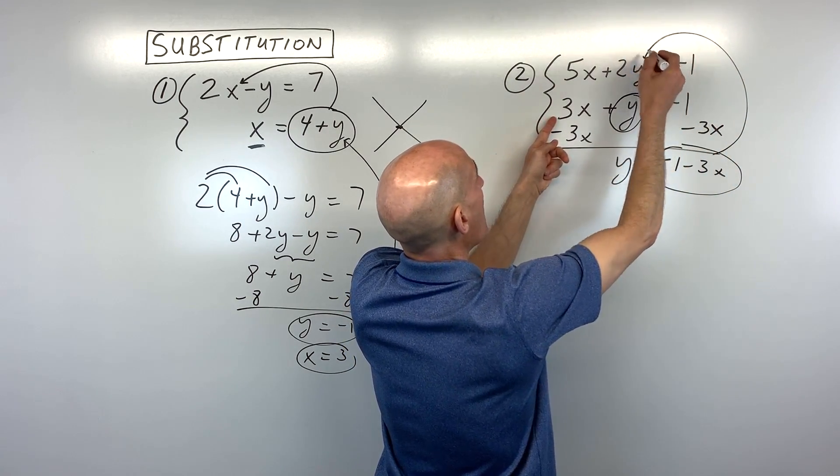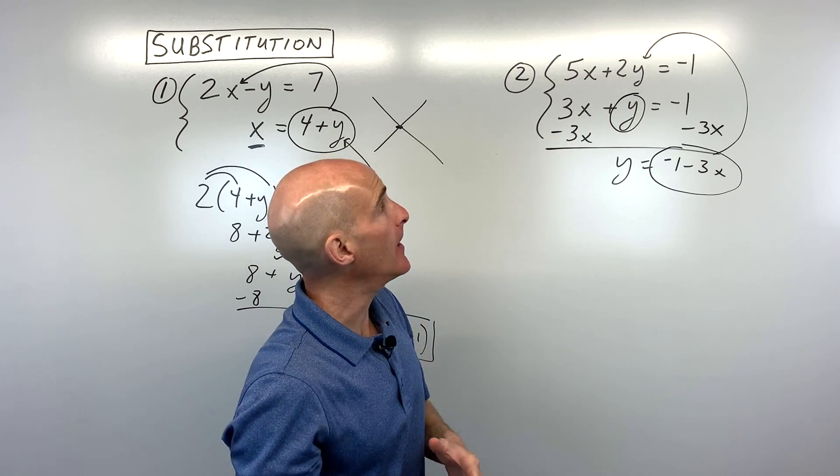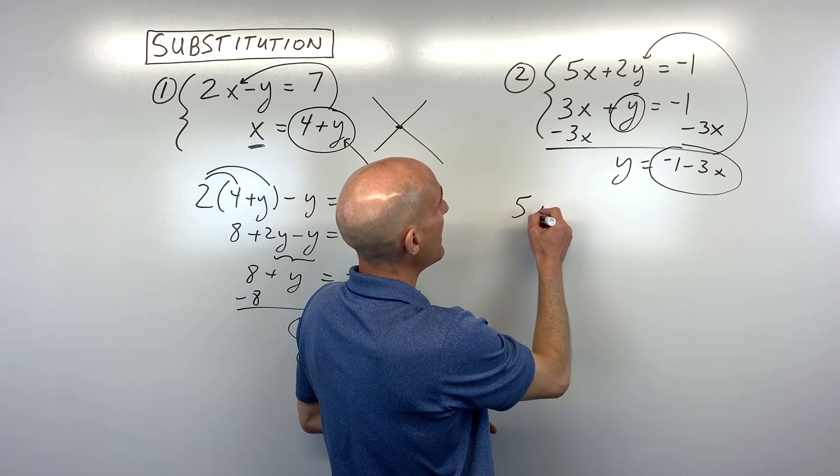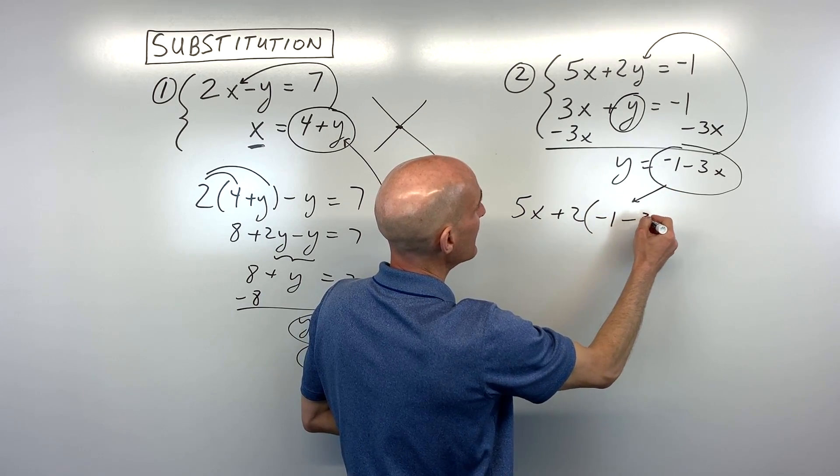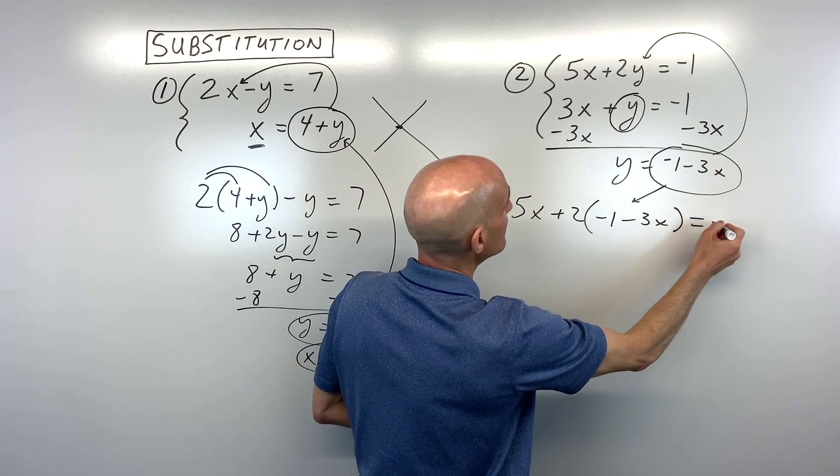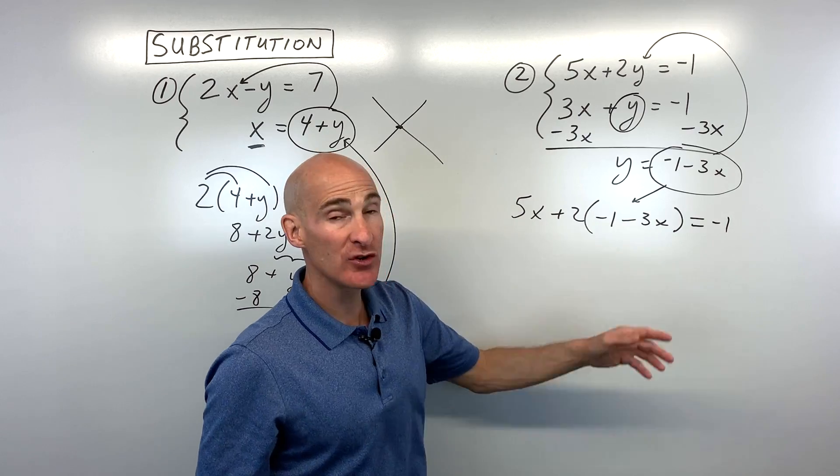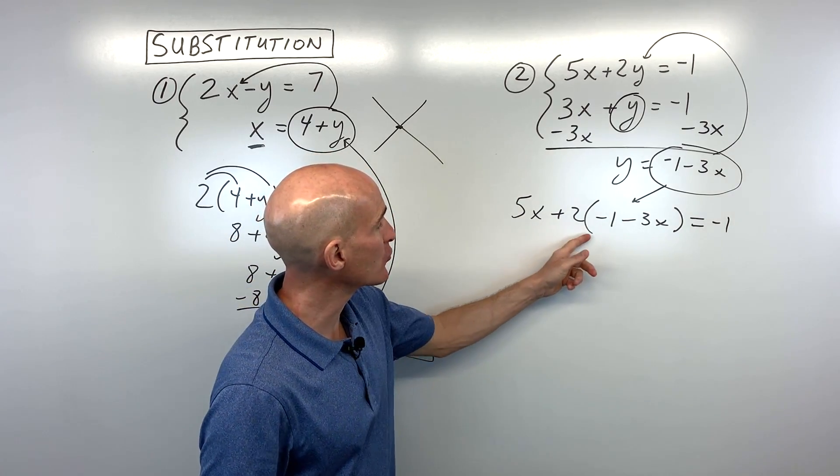Let's put it in for y in the equation we haven't used yet - the first equation. We have 5x plus 2 times - instead of y, I'm going to put what y equals: negative 1 minus 3x - equals negative 1. Remember, when you do that substitution, put it in parentheses to treat it as a group.